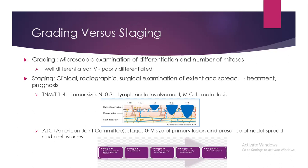The American Joint Committee implements stages zero to four. Stage zero is carcinoma in situ — the early form. Stage one is localized. Stage two is early locally advanced. Stage three is late locally advanced. Stage four means it has already metastasized. When a patient is at stage three or four, the prognosis is already poor.